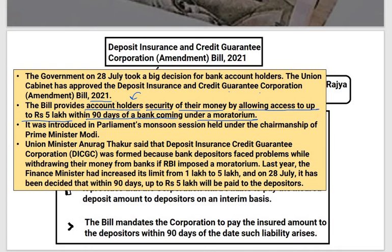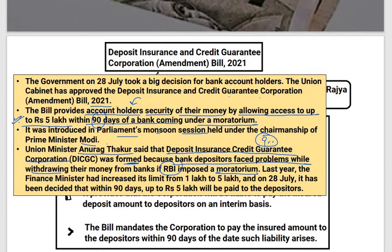So if RBI has imposed a moratorium on a bank, then within 90 days, account holders can withdraw up to 5 lakhs. It was introduced in Parliament's monsoon session held under the chairmanship of Prime Minister Narendra Modi. Union Minister Anurag Thakur said that the Deposit Insurance Credit Guarantee Corporation was formed because bank depositors faced problems while withdrawing their money.